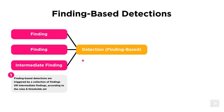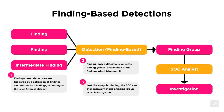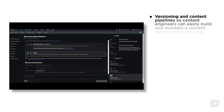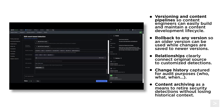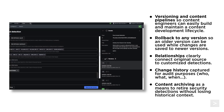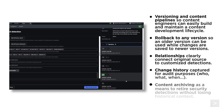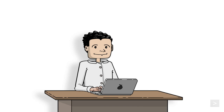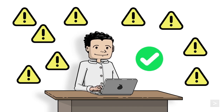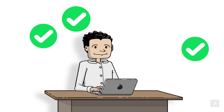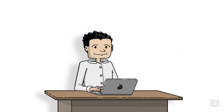The second new detection type is finding-based detections. These detections do not consume Splunk events, but instead they consume other findings, like true findings and intermediate findings. Another powerful new feature is detection versioning, enabling security teams to manage and track changes to detection rules over time. This ensures that organizations can maintain an audit trail of modifications and revert to any previous versions if necessary, simplifying the investigation process and enabling analysts to focus on high-priority incidents.